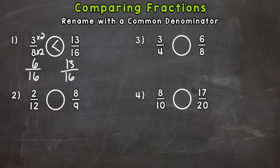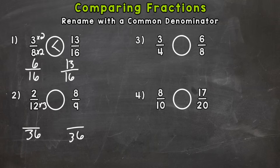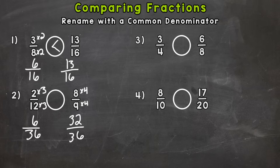For number two we have two twelfths and eight ninths. We do not have a common denominator so let's find one and rename. For 12 and 9 the common denominator is 36. 12 times 3 is 36, so do the same to the top: 2 times 3 is 6. 9 times 4 is 36, so do the same to the top: 8 times 4 is 32. Now that we have a common denominator and renamed, it's easy to compare — six thirty-sixths is less than thirty-two thirty-sixths.